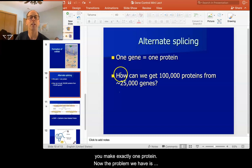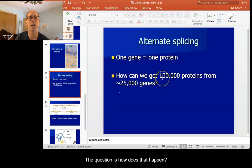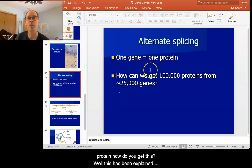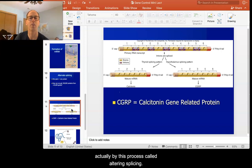Now the problem we have is if you look at humans, humans have here 25,000 genes thereabouts. Our cells can make about 100,000 or so proteins. So the question is how does that happen? How can you have, if one gene codes for one protein, how do you get this? Well, this has been explained actually by this process called alternative splicing.